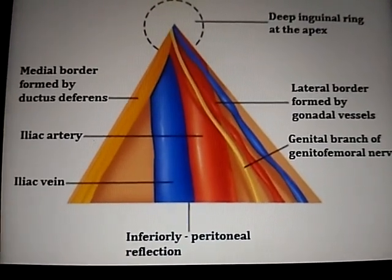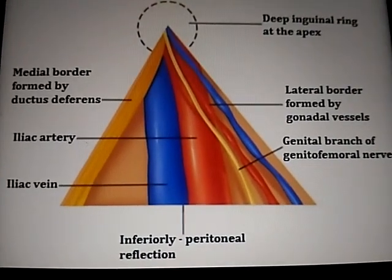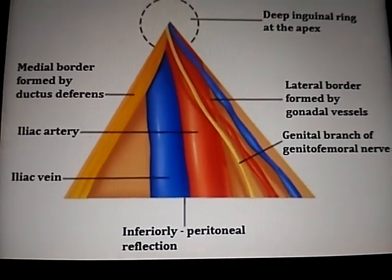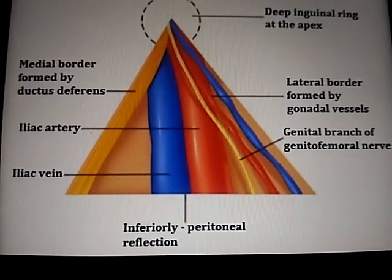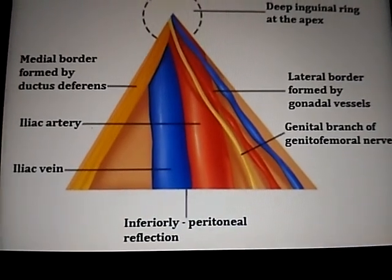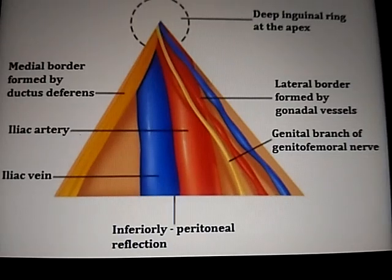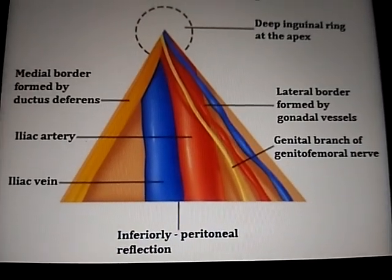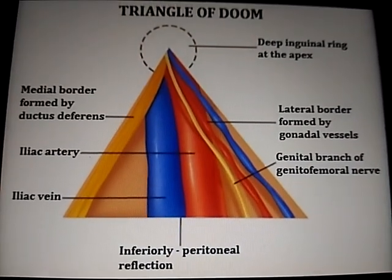These are the contents of triangle of doom: iliac vessels, iliac artery and iliac vein, and genital branch of genitofemoral nerve. This is triangle of doom.